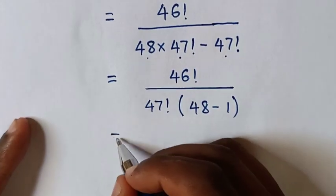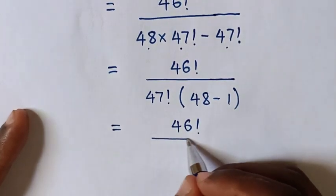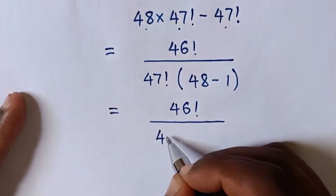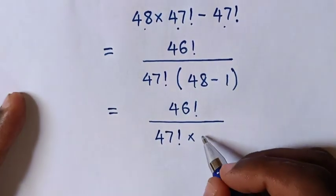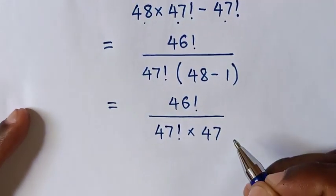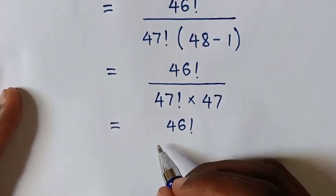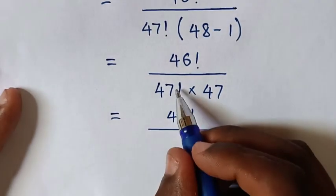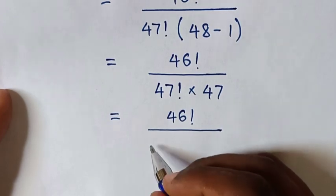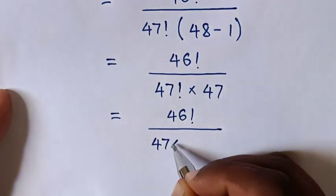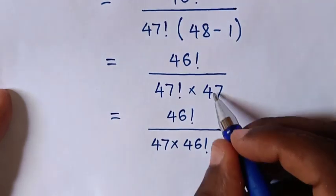The bracket equals 48 minus 1, which is 47. So we have 46 factorial over 47 factorial times 47. Then, for this 47 factorial, we factor out the common 46 factorial: 47 factorial is the same as 47 times 46 factorial, times this 47.